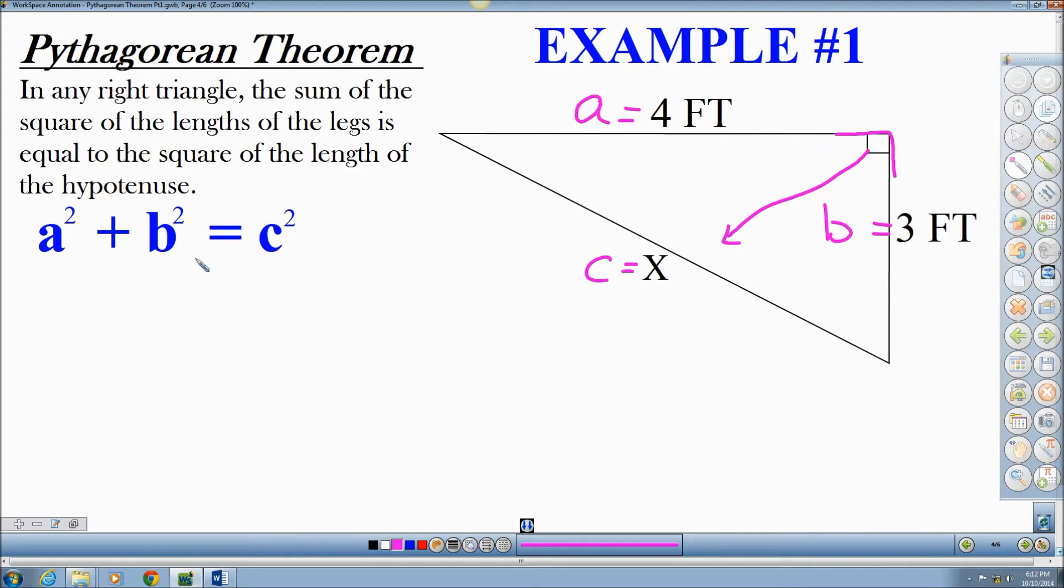A equals 4, so I'm going to have 4 squared plus B, which is 3 being squared. It's going to equal side C, which in this case is going to be X, and it is also squared.